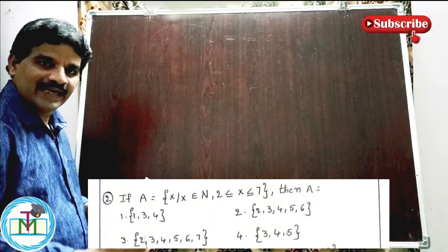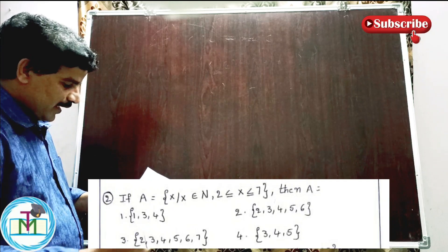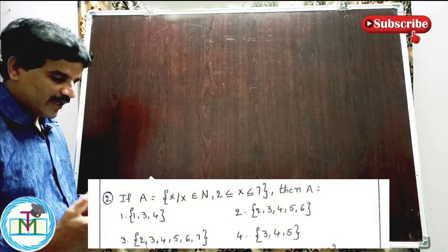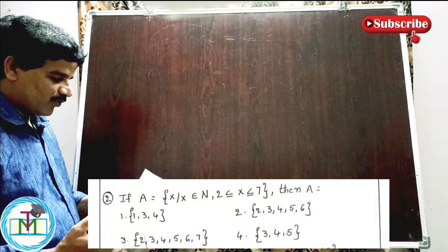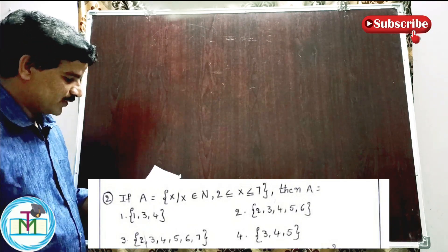Question number two: x belongs to N, x is a natural number, such that 2 is less than or equal to x is less than or equal to 7. Then A is equal to how much?